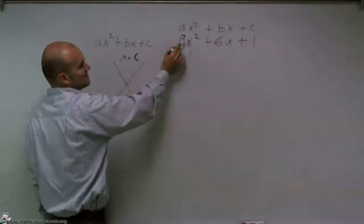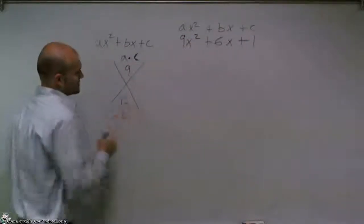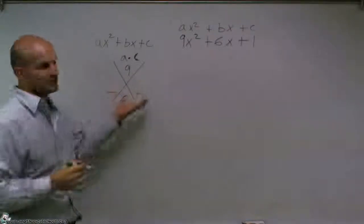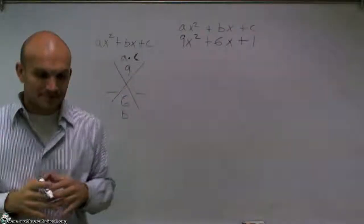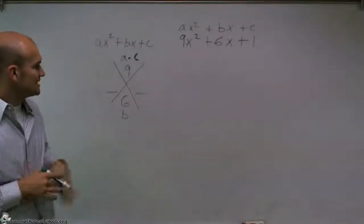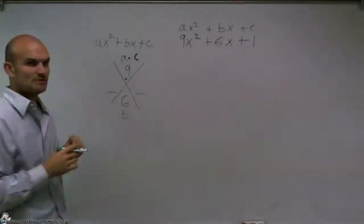So my a times c would be 9 times 1, which is 9, and my b is going to be 6. Now, what I'm going to do to find these two areas of my diamond, or this little box I guess I should say, is I need to say, what two numbers multiply to give me 9? So what factors multiply to give me 9,